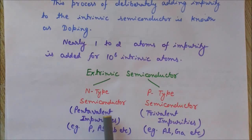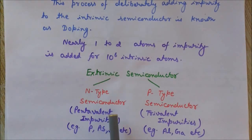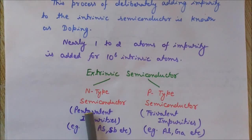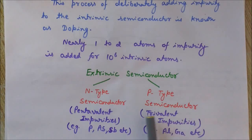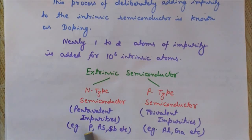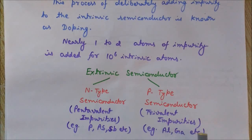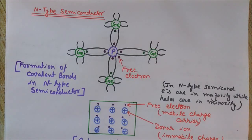N-type semiconductors are formed when we add pentavalent impurities — atoms that have five electrons in their valence shell, hence called pentavalent. P-type semiconductors are formed with trivalent impurities — atoms that have only three electrons in their outermost shell, hence their valence is three. Examples of pentavalent impurities are phosphorus (P), arsenic (As), and antimony (Sb), while examples of trivalent impurities are aluminium and gallium.